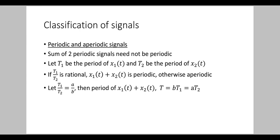If it is periodic, then the period of the resultant signal can be found as follows. Let T1 by T2 be equal to a by b, a rational number. Then the period of x1(t) plus x2(t) is T = b·T1 = a·T2. In this way, we can find the period of the resultant signal. I will explain it with some examples.